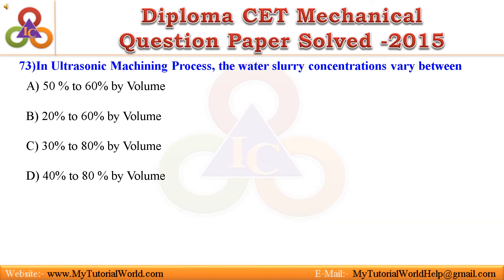Question 73. In ultrasonic machining process, the water slurry concentration varies between: A. 50% to 60% by volume, B. 20% to 60% by volume, C. 30% to 80% by volume, D. 40% to 80% by volume. Answer is 20% to 60% by volume.